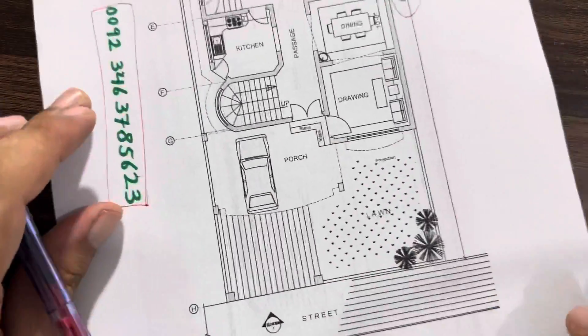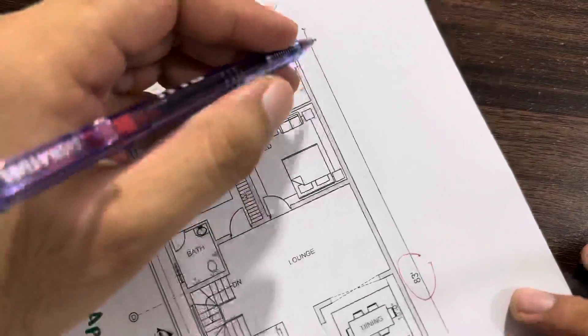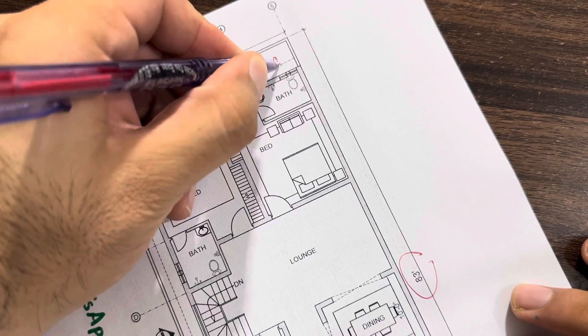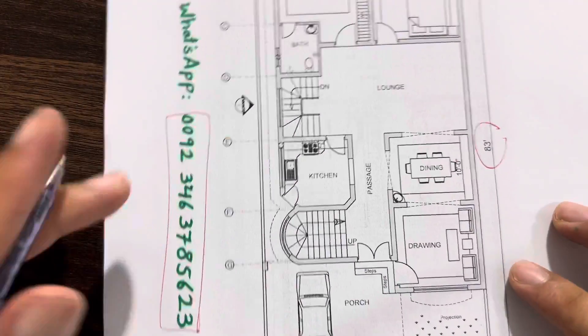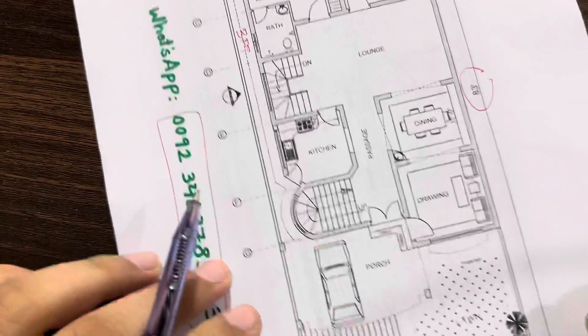I designed this plan for one of my clients. You can see backside is open passage, which is 5 feet width. And left side is open passage, which is 3 feet width, with boundary wall.